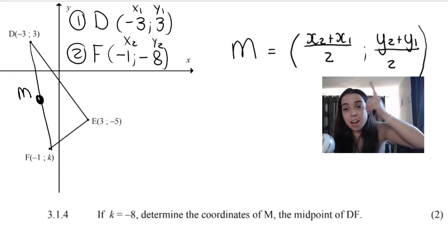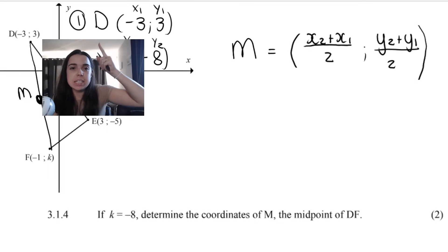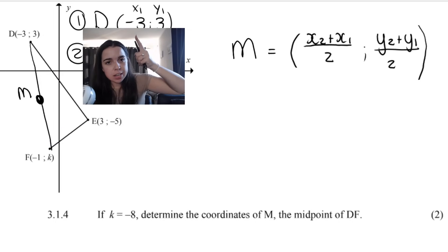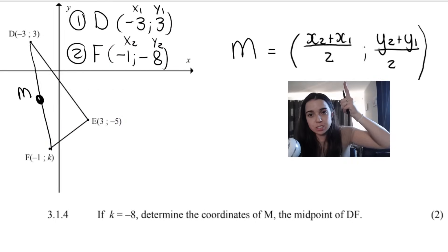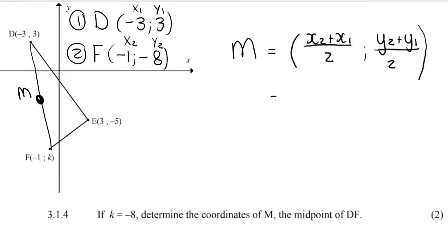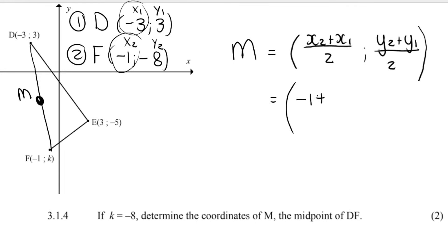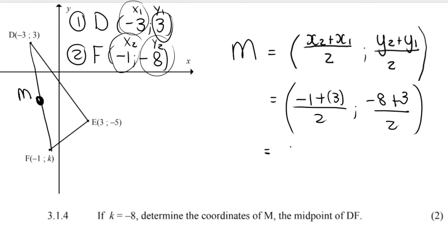You need to use the midpoint formula. I've written out the midpoint formula and the coordinates D and F. I've labeled D as number 1 and F as number 2, so X1, Y1, X2, Y2. Filling in: X2 is −1 plus X1 which is −3, divided by 2; Y2 is −8 plus Y1 which is 3, divided by 2. Simplifying: −1 + (−3) = −4 divided by 2 = −2, and −8 + 3 = −5 divided by 2 = −5/2.